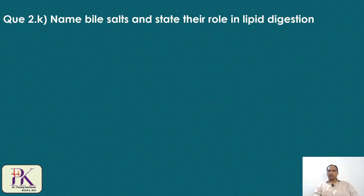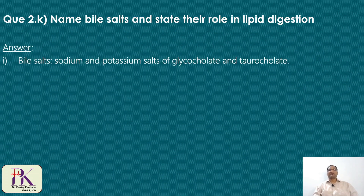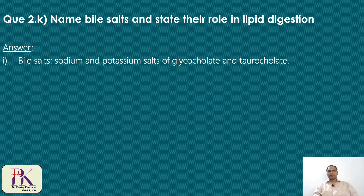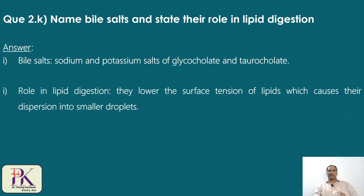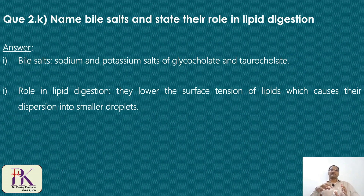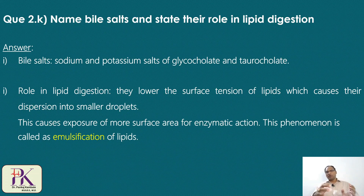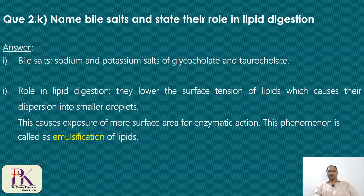The last question: name the bile salts and state their role in lipid digestion. Bile salts are sodium and potassium salts of glycocholate and taurocholate — that is, sodium glycocholate, sodium taurocholate, potassium glycocholate, and potassium taurocholate. Their role is mainly emulsification: bile salts lower the surface tension of lipids, causing their dispersion into smaller droplets. This increases the surface area exposed for the action of digestive enzymes. This process is called emulsification of lipids.